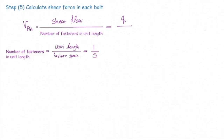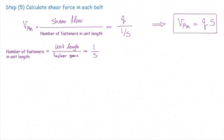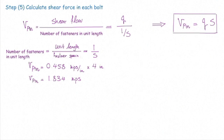Calculating numerically: V_pin = q × S = 0.458 × 4 = 1.834 kips. In other words, each pin is responsible for transferring 1.834 kips of force.